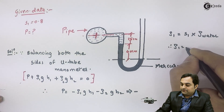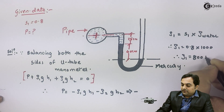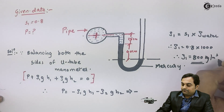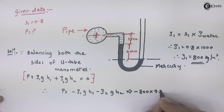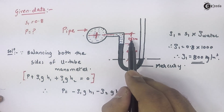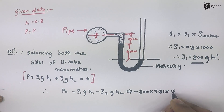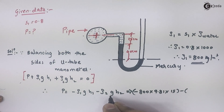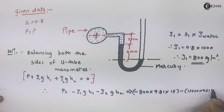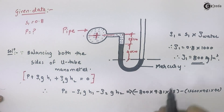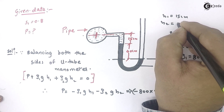So rho1 = 800 kg/m³. Substituting: 800 × 9.81 × H1, where H1 = 15 centimeters. Then minus rho2, the density of mercury = 13600, times 9.81, times H2, where H2 is the mercury level difference = 40 centimeters.